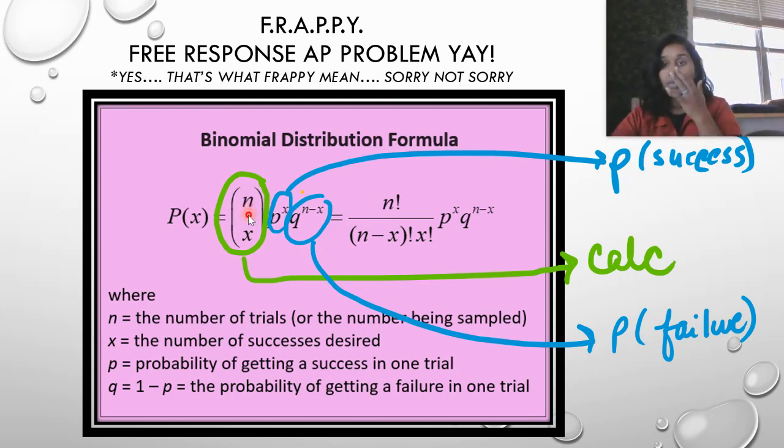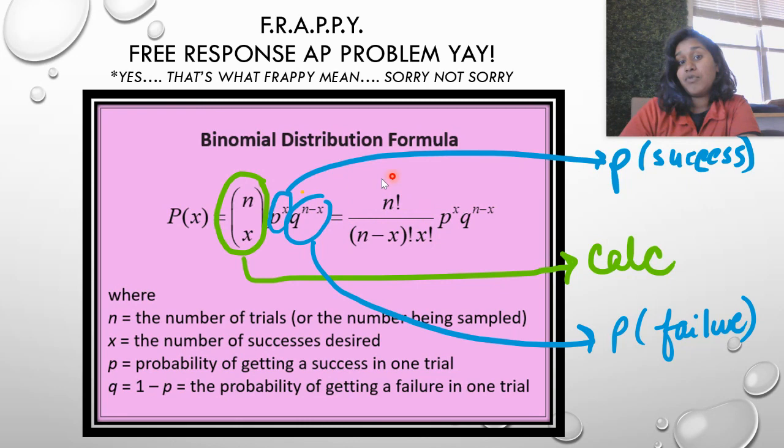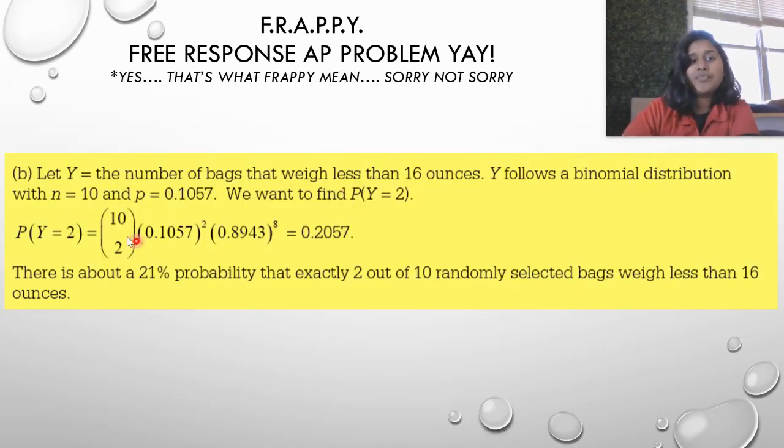This in green you can use a calculator to find. That is the probability of your successes versus the number of successes you want. This is the breakdown of that formula using your factorials, but this is so much easier if you just use a calculator, whether you have access to a TI Inspire or 84 or you use just any old online binomial calculator. You can find this information.